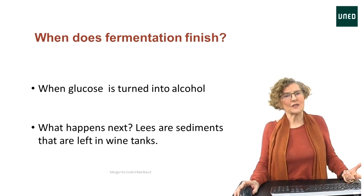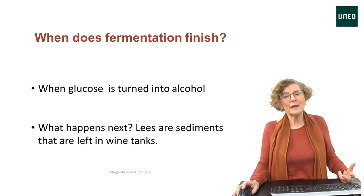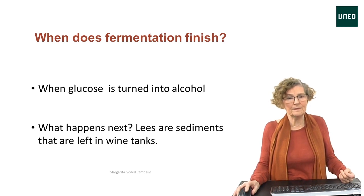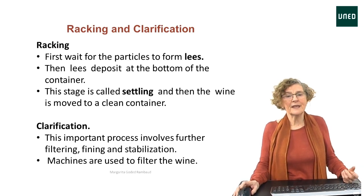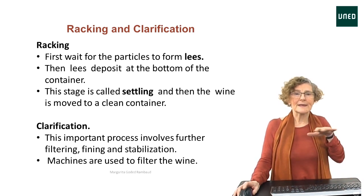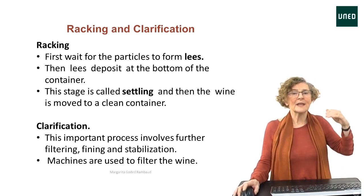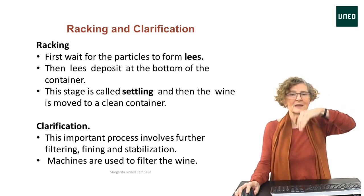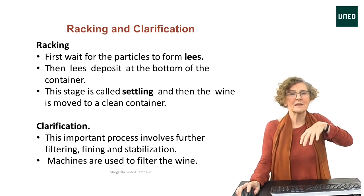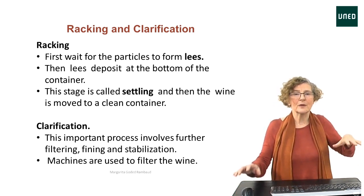When does fermentation finish? Fermentation is finished when all the glucose has been converted into alcohol. The winemaking process then continues with the removal of lees. In the racking and clarification process, we first wait for the particles to form lees, which then go to the bottom of the tanks and barrels thanks to gravity. This stage is called settling because they settle down there.